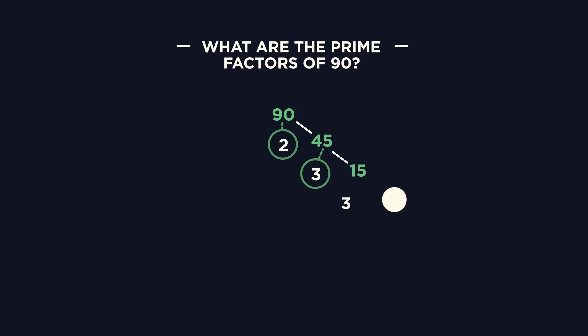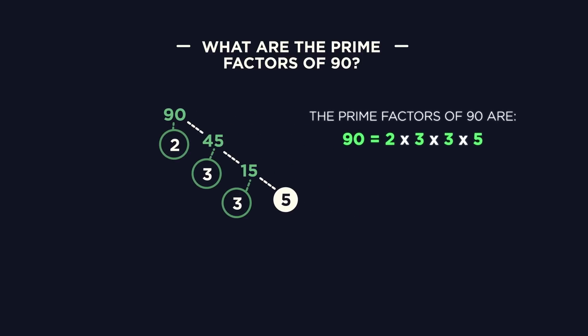3 goes into 15 5 times, and circle both the 3 and the 5 as they are both prime numbers. We've ended up with 2 prime numbers, so that means we've finished the prime factor tree. The prime factors of 90 are 2 times 3 times 3 times 5, which we can also write as 2 times 3 squared times 5.